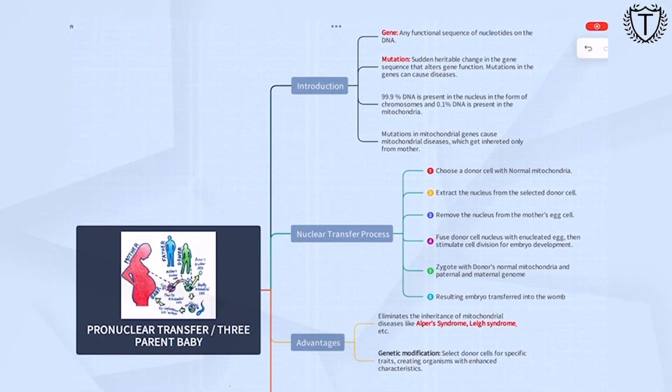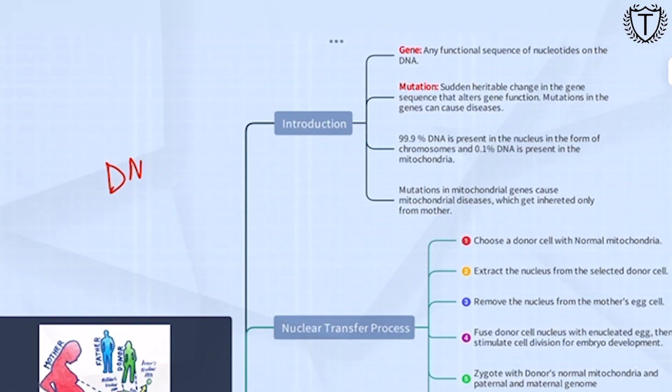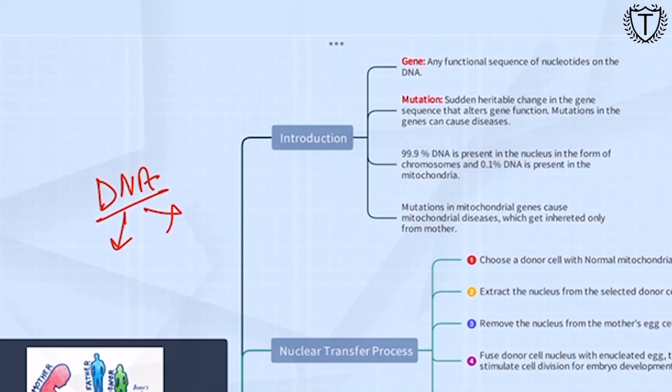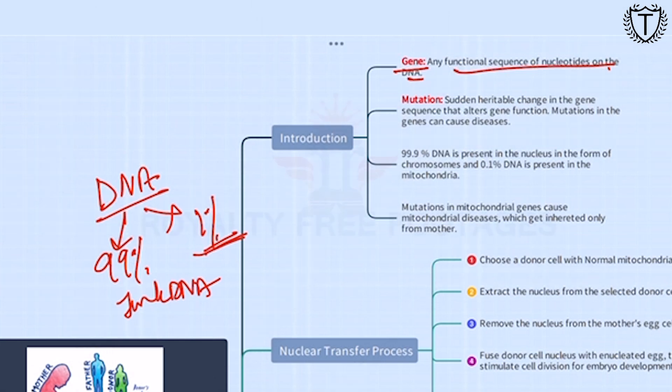In each cell of the human body there is DNA. Out of that DNA, 99% is junk DNA and the rest 1% is your functional DNA. That functional DNA codes for all the characteristics of the human body. On those functional DNA there is presence of genes. So a gene is any functional sequence of nucleotides on the DNA.